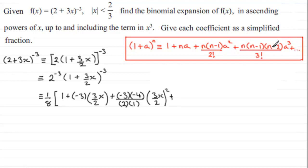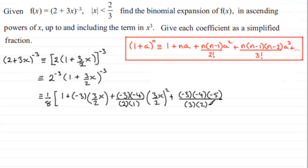The next term is: n(n-1)(n-2)/3! times a³, which is (-3)×(-4)×(-5) over 3×2×1, multiplied by (3/2)x all cubed, plus and so on. Even though we only need up to x³, we should still include the '+ ...' notation.